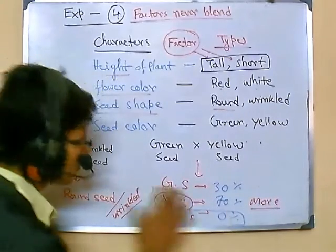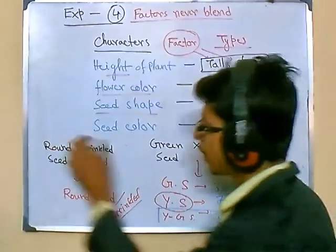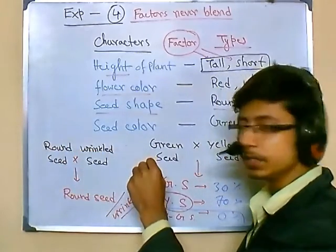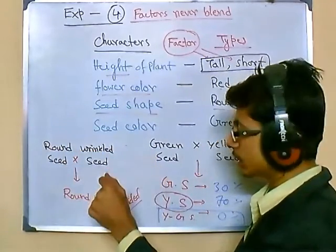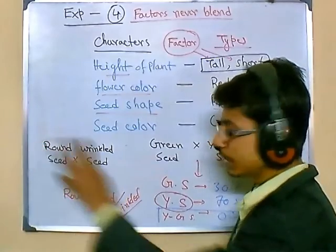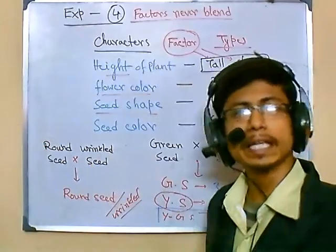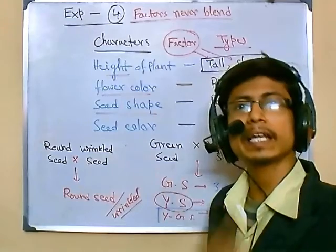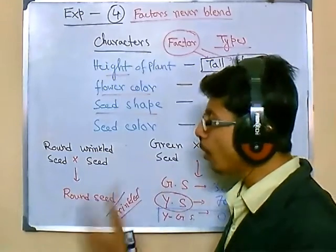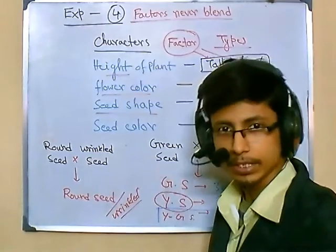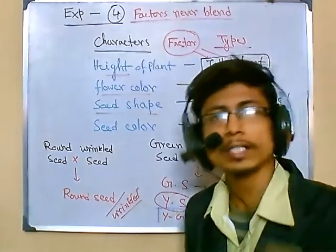Similarly, when he crossed a round seed plant with a wrinkle seed plant, in the next generation he found more round seed plants than wrinkle seed plants. Even after conducting this experiment again and again, he consistently found more round seeds and fewer wrinkle seeds.